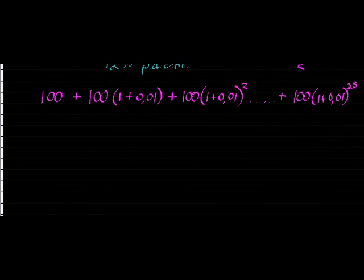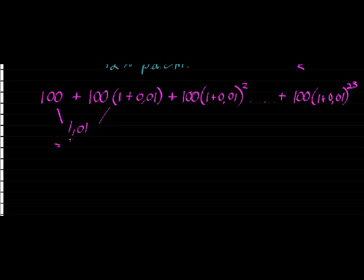Now this is where bells should be going off. Because this looks very much like a pattern, doesn't it? Let's see. It's definitely not arithmetic. It is for sure geometric. Why? Because every time I'm multiplying with the same bracket. I'm multiplying with 1.01. In other words, the bracket 1 plus 0.01.